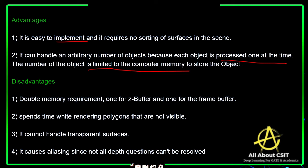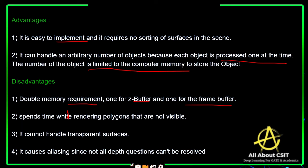The disadvantages are: it has double memory requirements — one for the Z buffer and one for the frame buffer. It spends time rendering polygons that are not visible. It cannot handle transparent surfaces, and it causes aliasing since not all depth questions can be resolved.